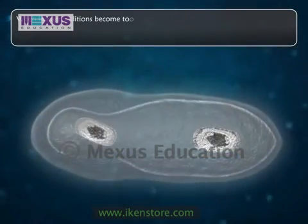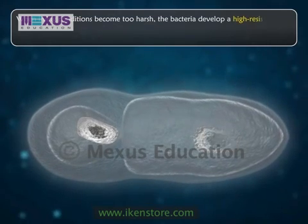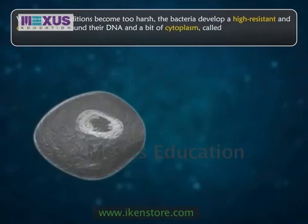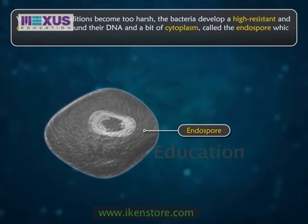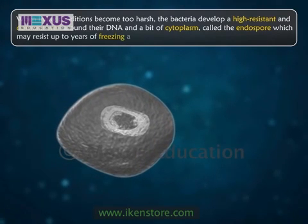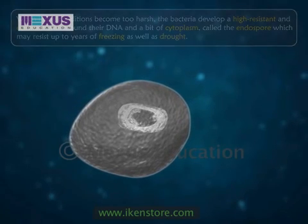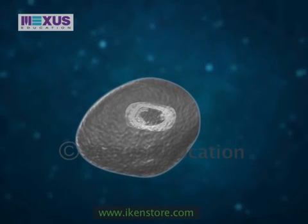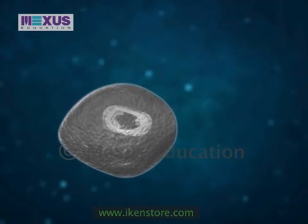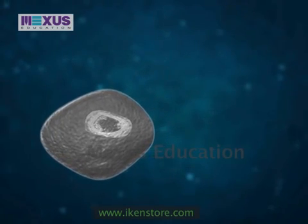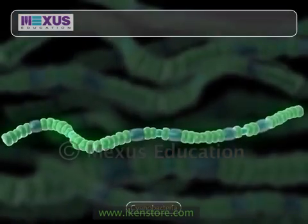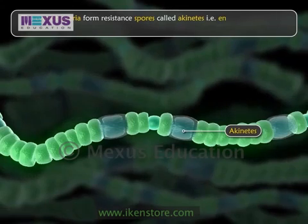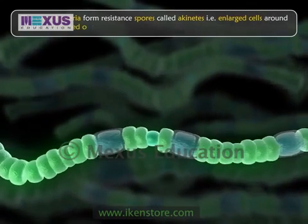When living conditions become too harsh, bacteria develop a highly resistant and dormant wall around their DNA and a bit of cytoplasm, called the endospore. The endospore may resist years of freezing as well as drought. The rest of the cell not covered by the endospore dies. When conditions become suitable again, the endospore becomes an active cell. Cyanobacteria form resistant spores called akinetes — large cells around which a thickened outer wall develops.